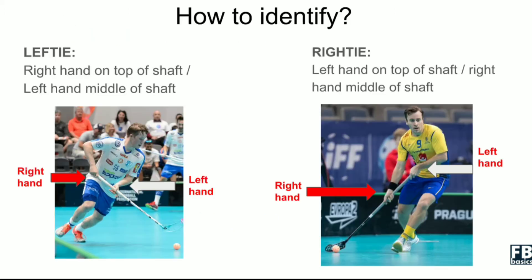Now quickly on how to identify a lefty as opposed to a righty. On the left side of the screen, you can see that for a lefty, the right hand will be on top of the shaft, whereas the left hand will be in the middle of the shaft. It takes quite a while for newbies or beginners to identify this, but after a while you'll be able to do this pretty easily.